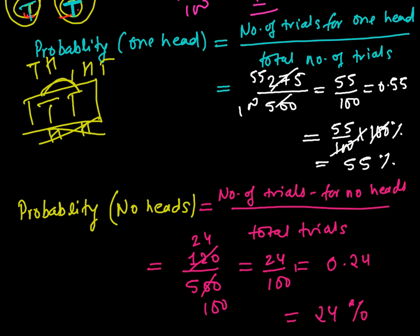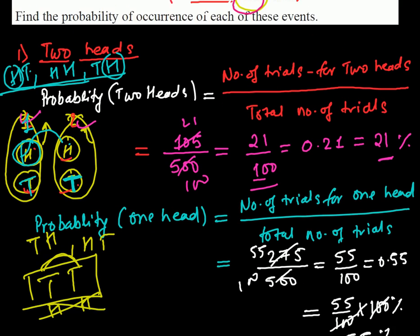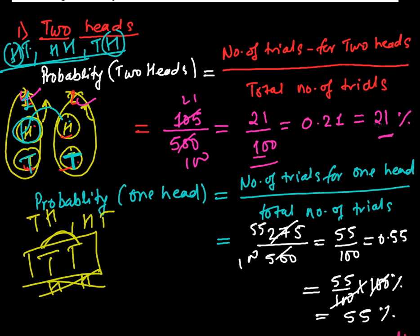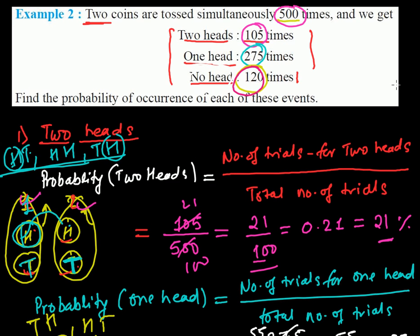So to summarize: probability of two heads is 21%, probability of one head is 55%, and probability of no heads is 24%. I hope you understand this question. Try similar problems — there are more on my blog. In the next video we'll be doing something a little different. See you there, bye bye.